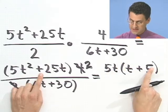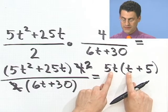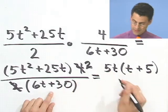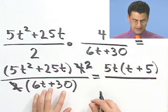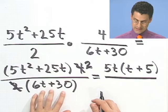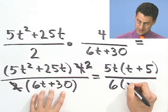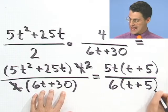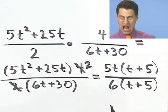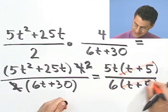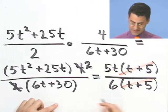You can distribute and see I have a 25, I'm sorry, I have a 5t squared plus 25t. On the bottom, it looks like I can easily factor out a 6. If I factor out a 6, I'm left with just a t plus 5. Oh, look at that. There's more cancellation. We can cancel this with this, and I'd see that this just equals.